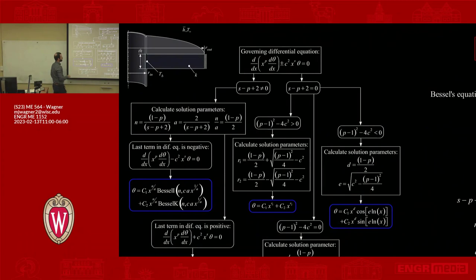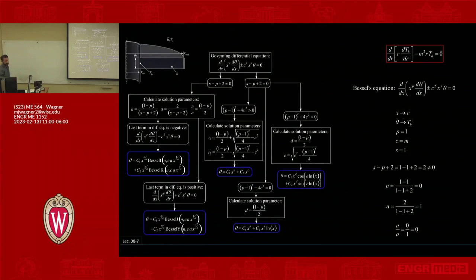And then if the last term is negative—that plus or minus C squared—if that's negative then you end up with this, which is where we are. If it's positive you do something else.